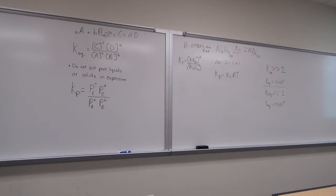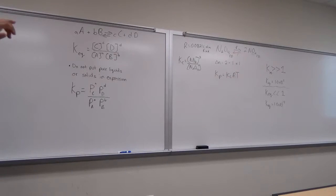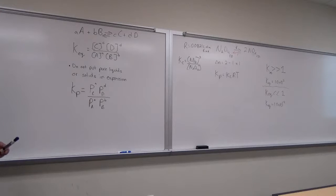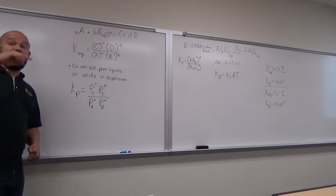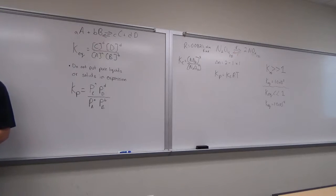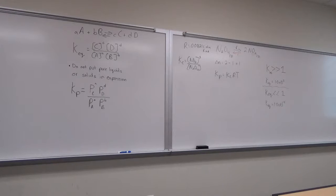Going back to kinetics and multi-step mechanisms — the equilibrium constant of the overall reaction is the product of the two individual equilibrium constants. These are not the rate constant K values; these are the equilibrium constants.